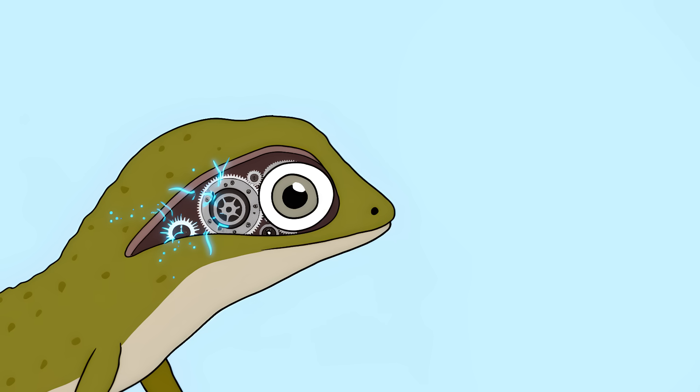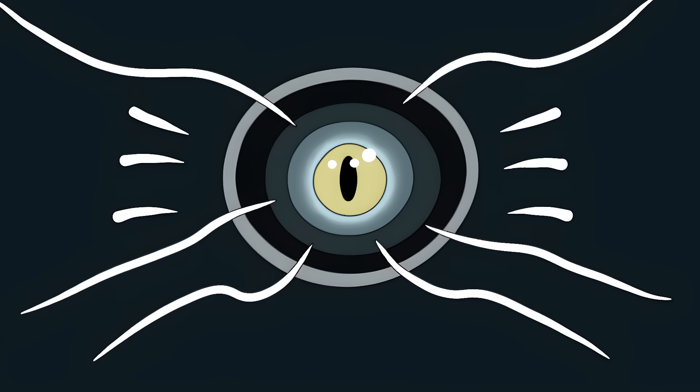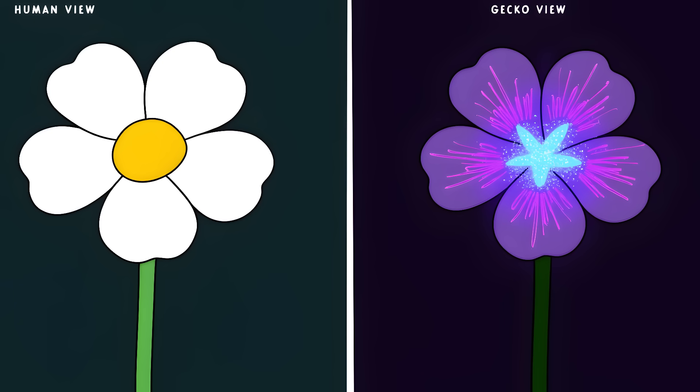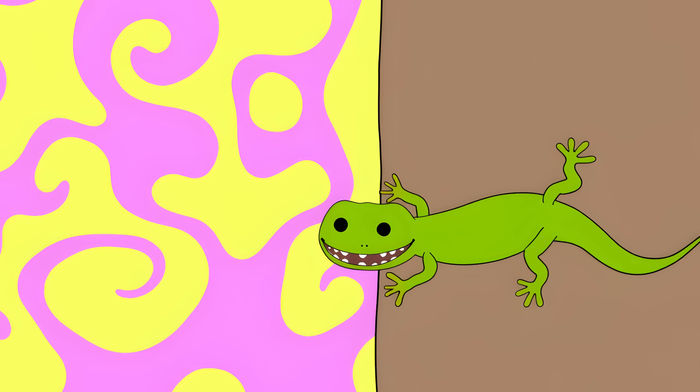Their eyes are also built like a crazy sci-fi device. They have these concentric zones, each focusing light differently. It's like having multiple camera lenses all working together to create the perfect shot. They can see ultraviolet light too. That boring white wall in your house might look like a psychedelic disco party to a gecko.